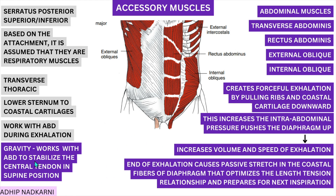Going on to serratus posterior superior and inferior, which are present posteriorly — because of their attachment in that region it is assumed they help in respiration, making them respiratory muscles. Then we have the transverse thoracis, which comes from the lower part of the sternum and attaches to the costal cartilages. These work along with the abdomen to create that same exhalation movement — bringing the ribs down. Finally, we have gravity, which also works with your abdomen.